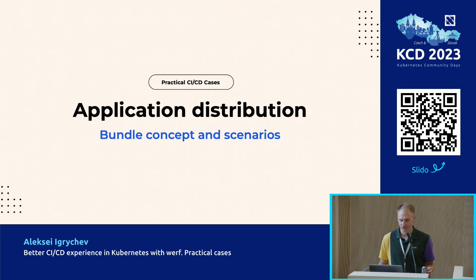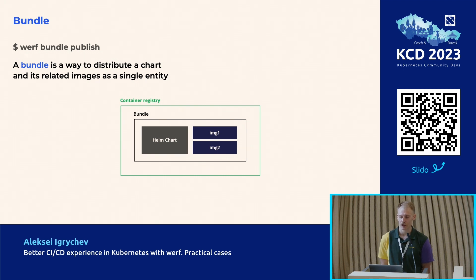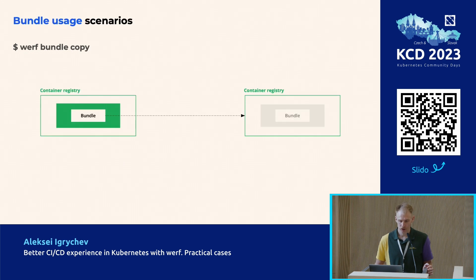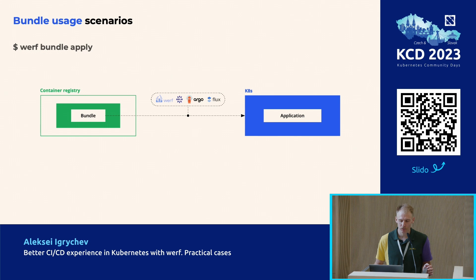One more thing: the application distribution concept of bundle and its usage scenarios. We suggest using bundle for application distribution. With a bundle you can pack the application state, Helm chart and its associated images for future deployments. A bundle is a distribution format that follows a specific structure for organizing Helm charts. A published bundle is a chart stored in an OCI repository along with its images. The published bundle can be copied from one container registry to another, as well as exported and imported as a TAR archive containing the Helm chart and associated images. The published bundle can be deployed using Werf, Helm, Argo CD, Flux, and other solutions that support working with Helm charts from an OCI repository. This is the recommended way to solve the problem of deploying in isolated environments.